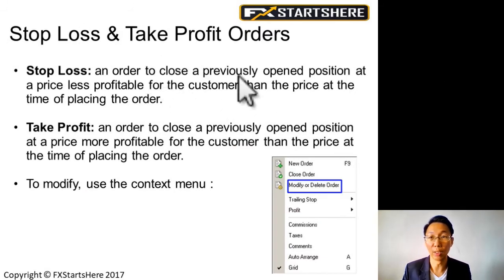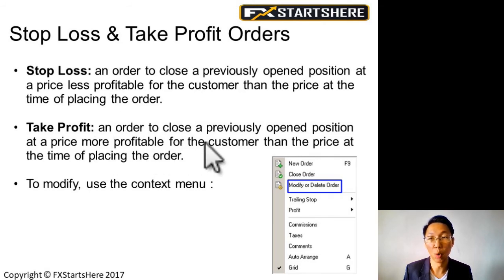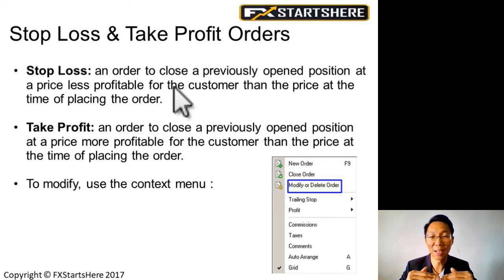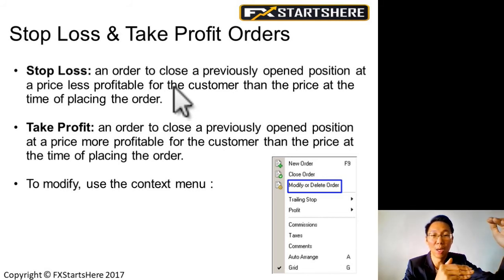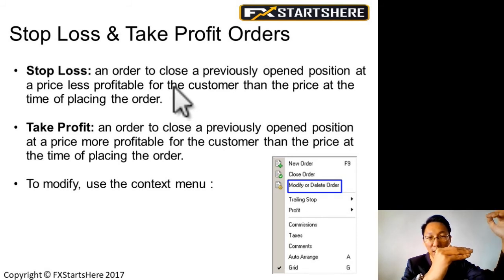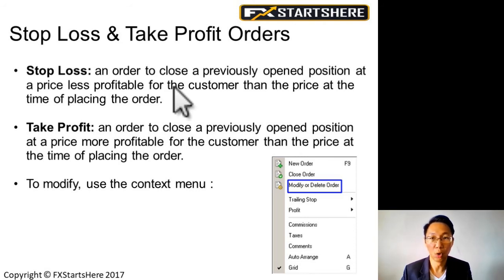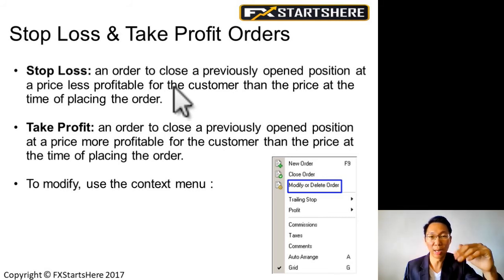Stop loss and take profit orders: a stop loss is an order to close a previously open position at a price less profitable for the customer than the price at the time of placing the order. Basically, stop loss means you want to exit when your trade is losing money. It could also be a positive stop loss when your trade is running at 50, 80, or 100 pips — you can stack your stop loss at a certain point so once the price comes back down to your stop loss it exits automatically. Rather than ending up in negative, you could still end up with a small profit.